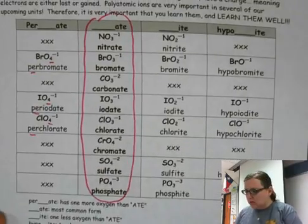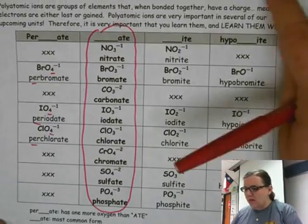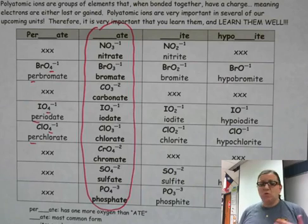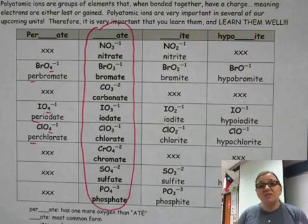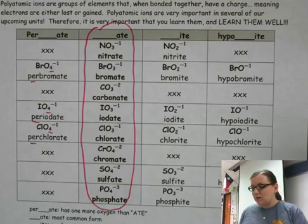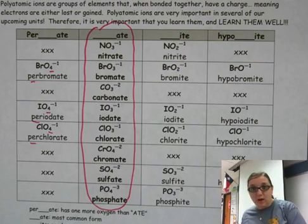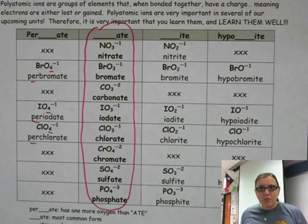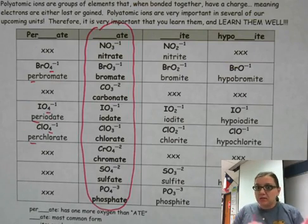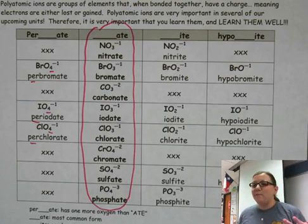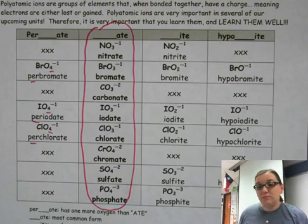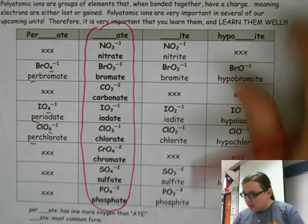Obviously there are some blanks and X's on the chart — those are ones that either aren't very common, don't fit the format, or don't exist, since some polyatomic ions are not stable. So those you don't have to memorize. This oxygen trend works for the 'per-ates,' '-ites,' and 'hypo-ites' we've taught you. There are other polyatomic ions that don't necessarily fit the plus-one or minus-one oxygen trend, but it works for a whole bunch of them — so wherever it applies, let's use it.